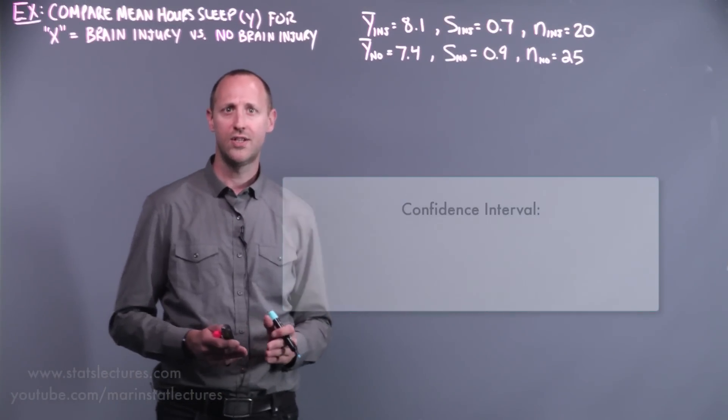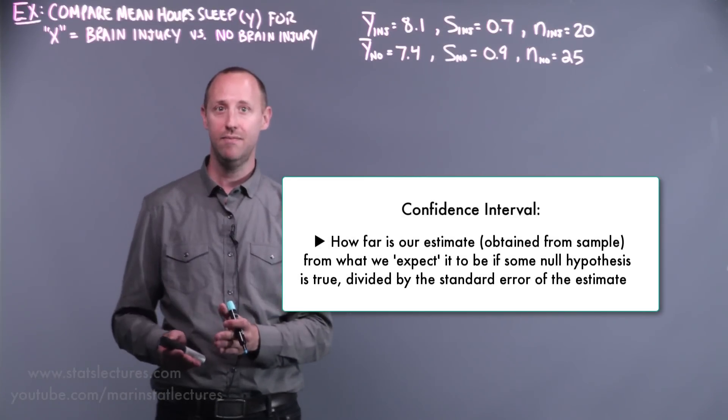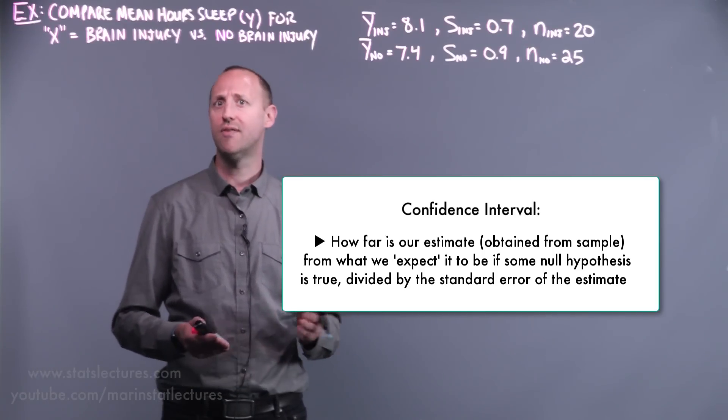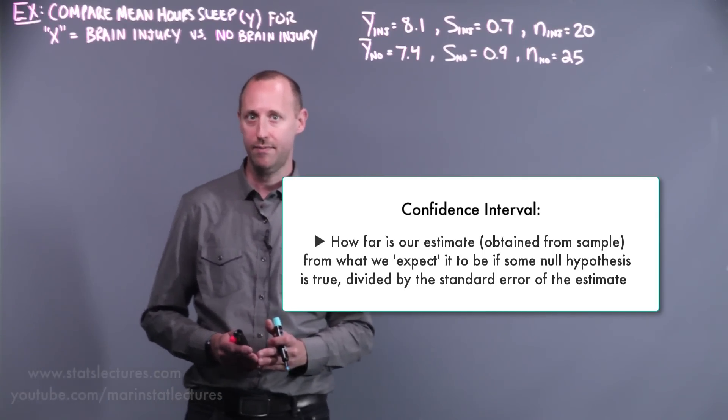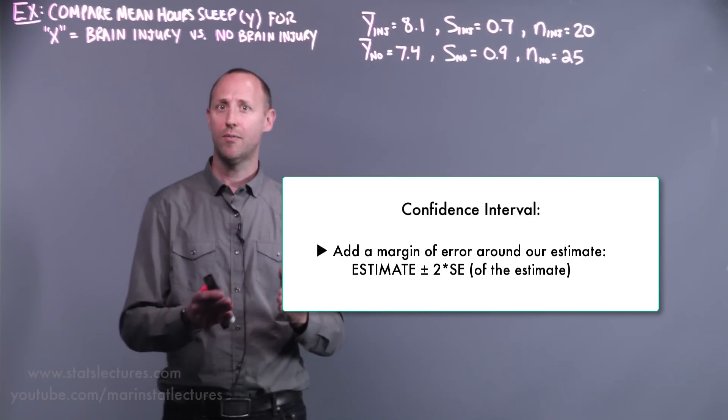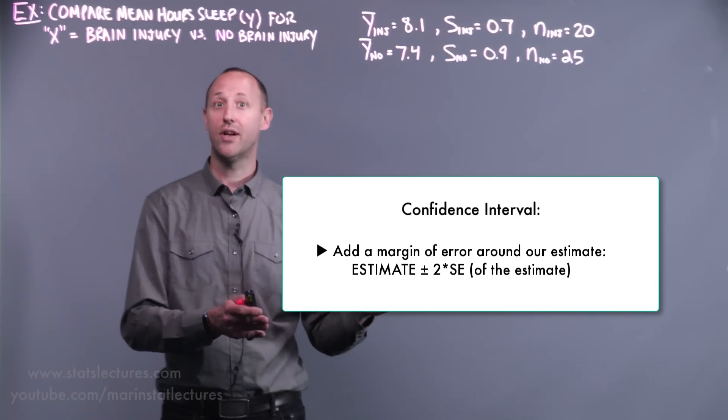Recall, in general, we can test hypotheses, and these compare how far is our estimate in data from what we'd expect it to be if some null hypothesis was true, usually divided by the standard error of the estimate. Or we can build a confidence interval. Take our estimate and tack on a margin of error, which is usually plus or minus about two standard errors of that estimate.